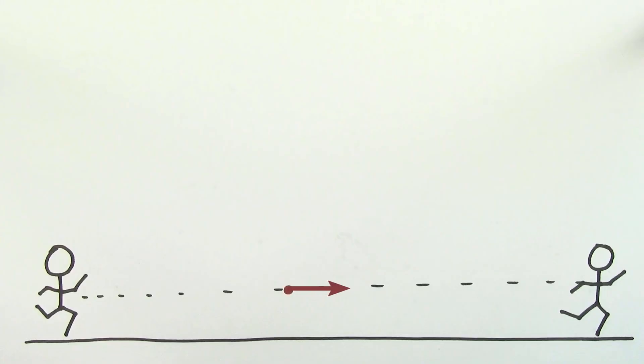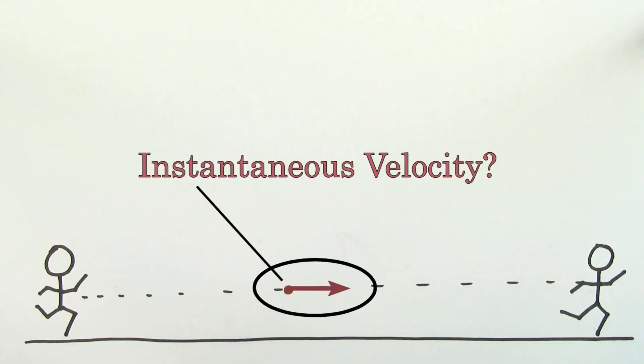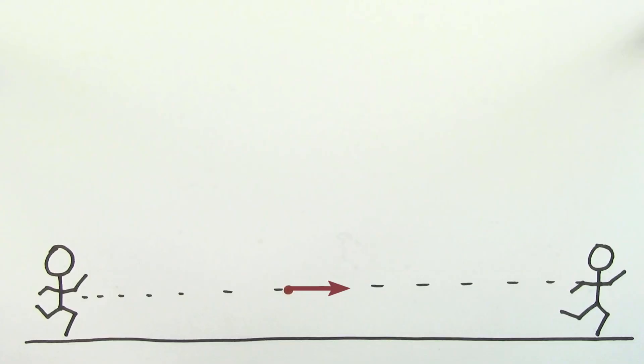In order to better zero in on the instantaneous velocity, we could choose an even smaller displacement over that even shorter time interval. But we're going to run into a problem here, because if you want to find a perfect value for the instantaneous velocity, you'd have to take an infinitesimally small displacement divided by an infinitesimally small time interval. But that's basically zero divided by zero, and for a long time, no one could make any sense of this.